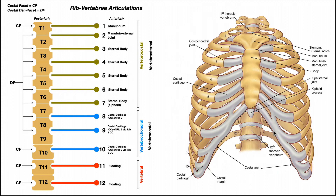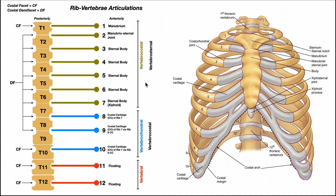Ribs 1 through 7 do not articulate with the sternum via a bony connection — they articulate via costal cartilage, a special type of hyaline cartilage connecting the rib to the sternum. This is why some sources call these ribs vertebrocostal: the ribs connect to the sternum through costal cartilage. Go with whatever terminology your instructor uses, and understand there is some discontinuity in naming.